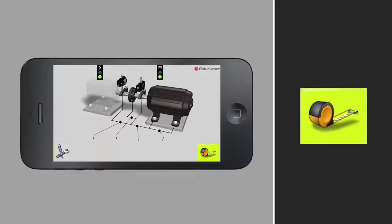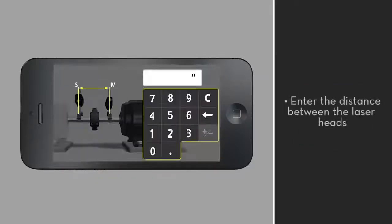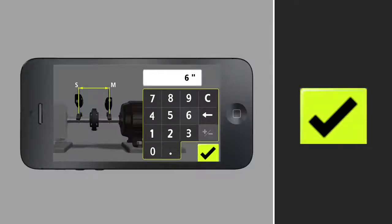Tap the tape measure icon to begin entering dimensions. Enter the distance between the laser heads, measuring to the nearest 1 eighth of an inch. Tap the check mark after entering each value.